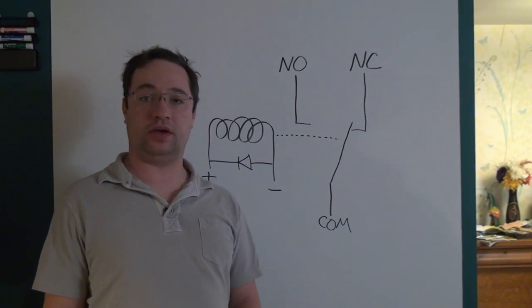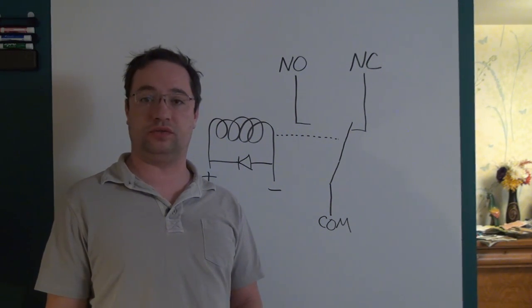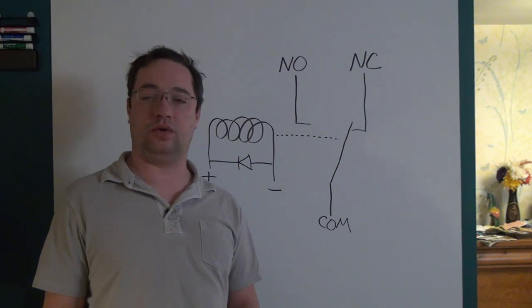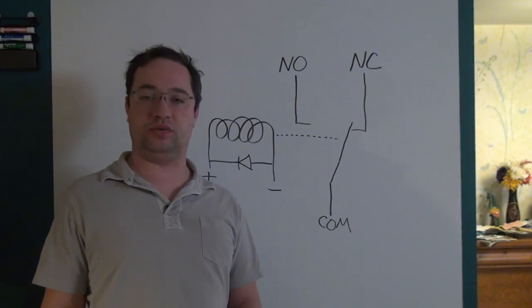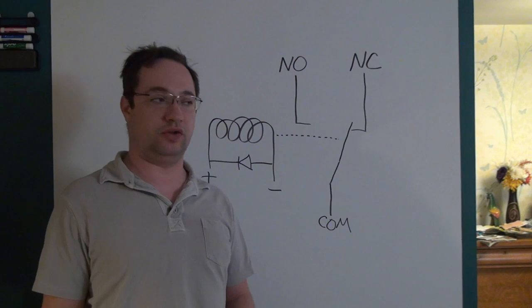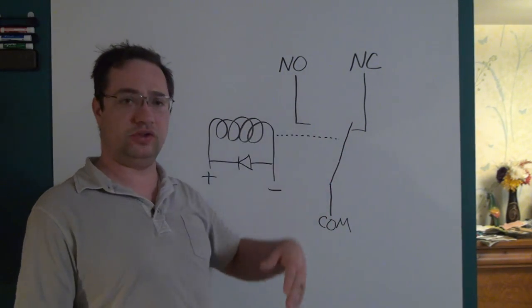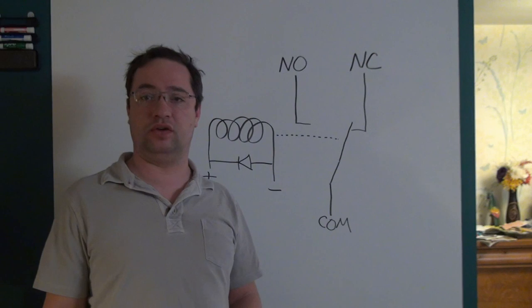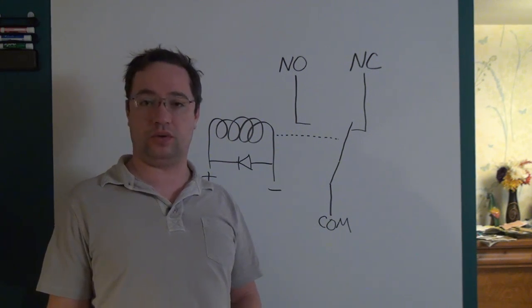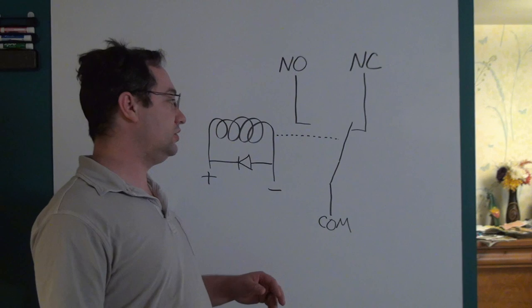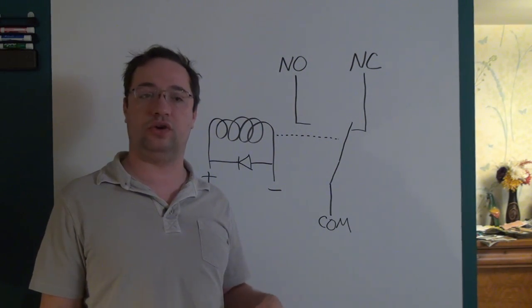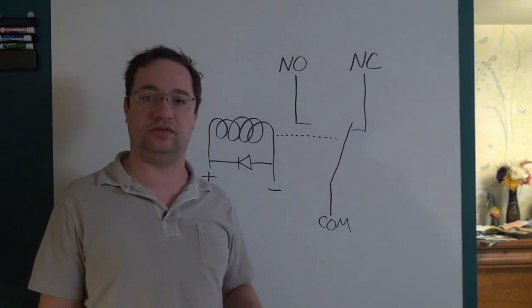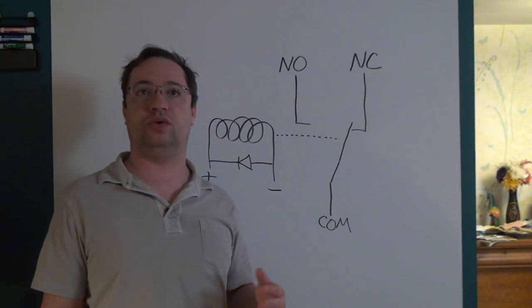To further complicate things, some relays will have a rating for a resistive load and some for an inductive load. The current rating for an inductive load will be much lower than for a resistive load. A resistive load is the simplest to switch because it doesn't have any kind of inrush or inductive effects.